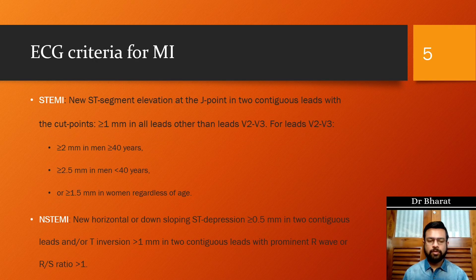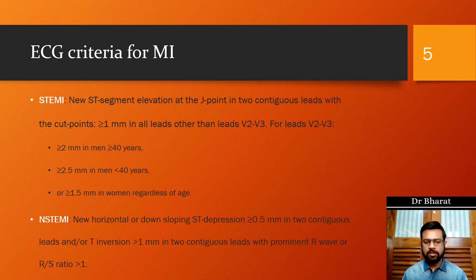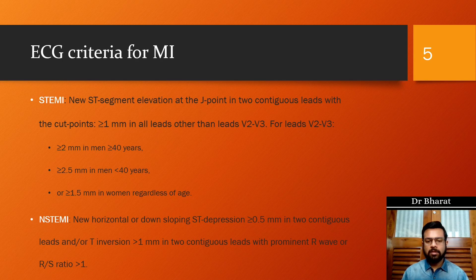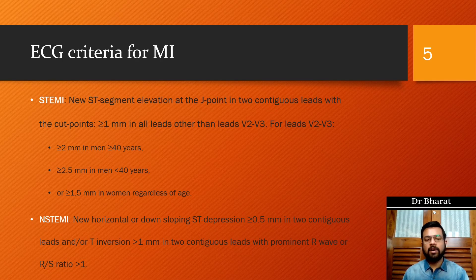Coming to ECG criteria for diagnosis of myocardial infarction, we have two sets of criteria for diagnosing ST Elevation MI and Non-ST Elevation MI. First we need to understand contiguous leads — leads that represent the same part of the heart on an ECG. Lead I and Lead aVL are contiguous leads. Lead II, Lead III, and Lead aVF are contiguous leads. Leads V1 to V6 are contiguous leads.